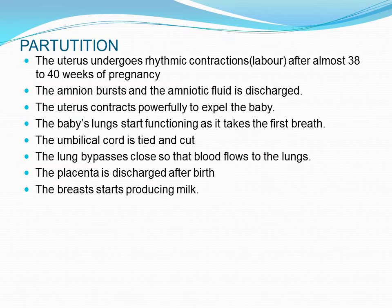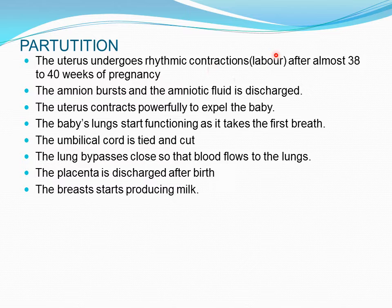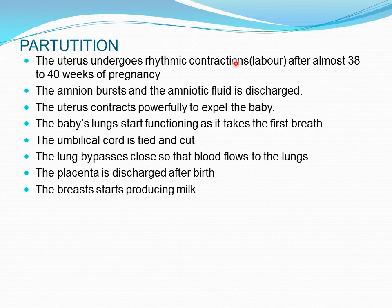At 40 weeks of pregnancy, the uterus starts undergoing rhythmic contractions called labor. This labor is initiated by a hormonal sequence: adrenocorticotropic hormone (ACTH) secretion increases from the fetal adrenal cortex, stimulating androgens, which are converted to estrogens in the uterus, causing the release of prostaglandins that initiate the contractions.